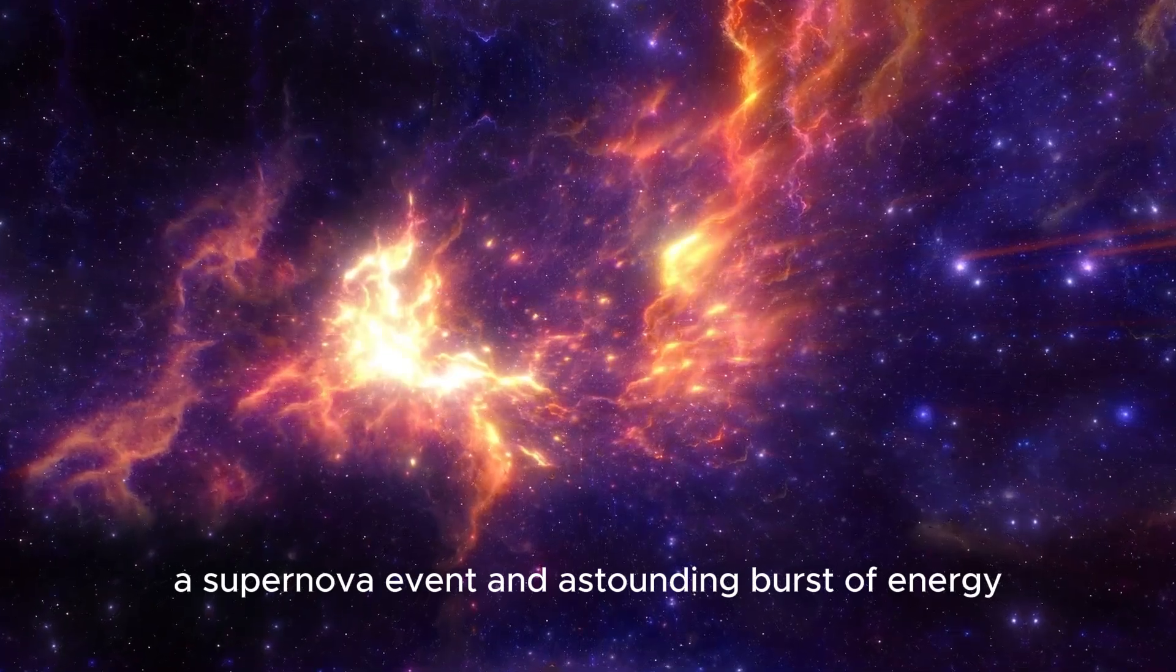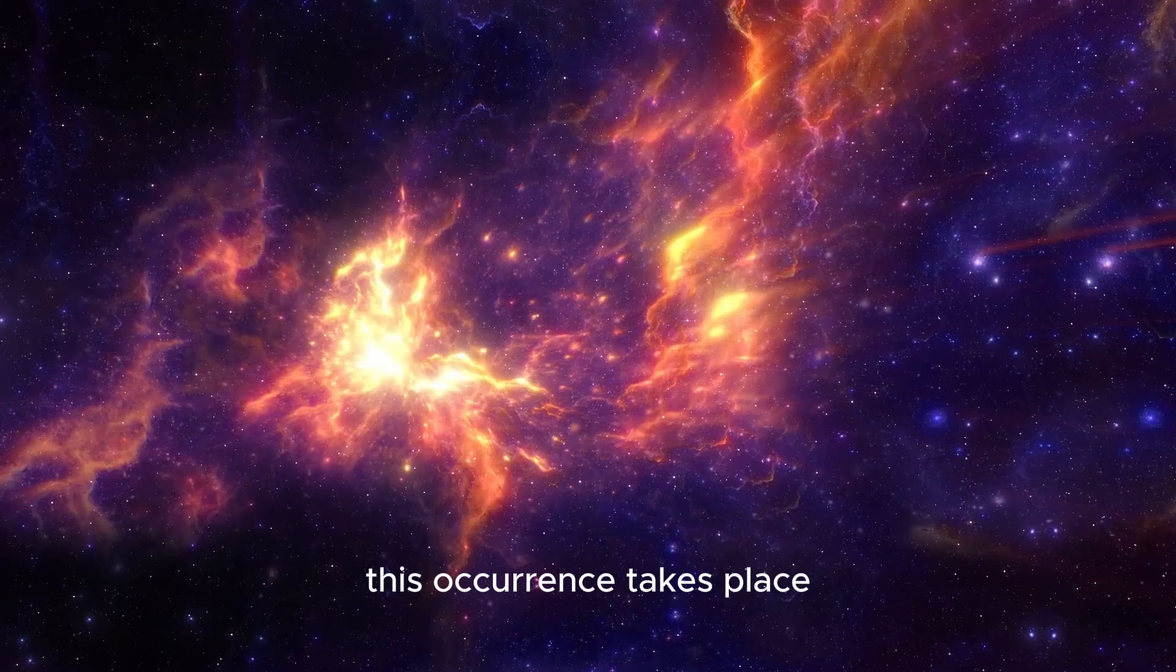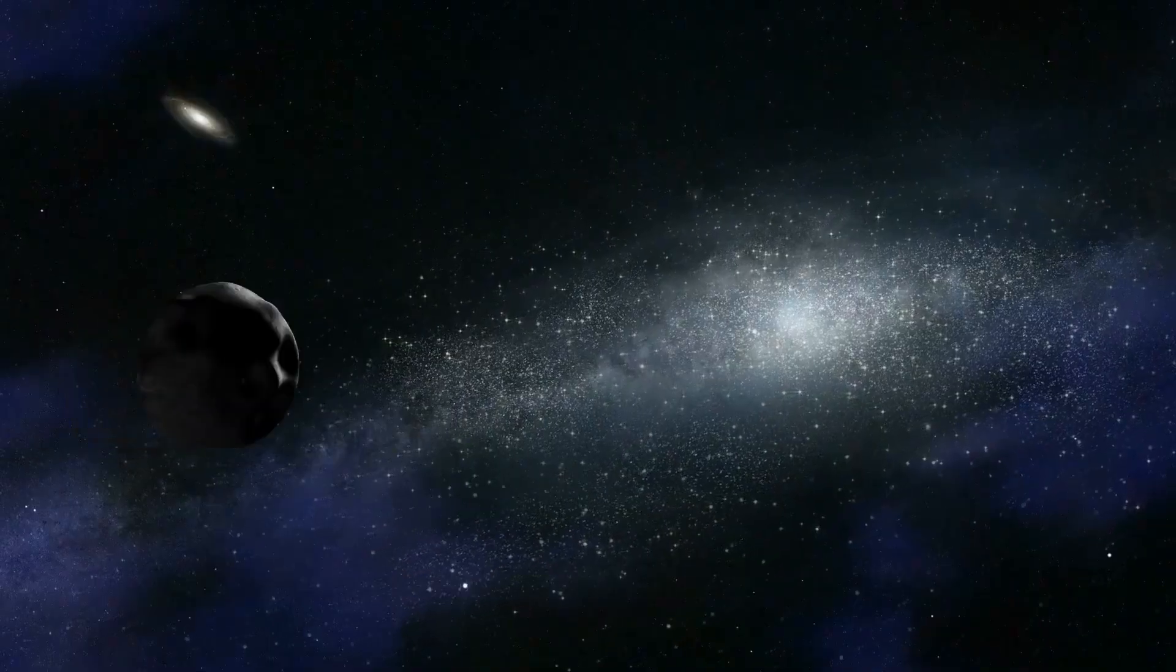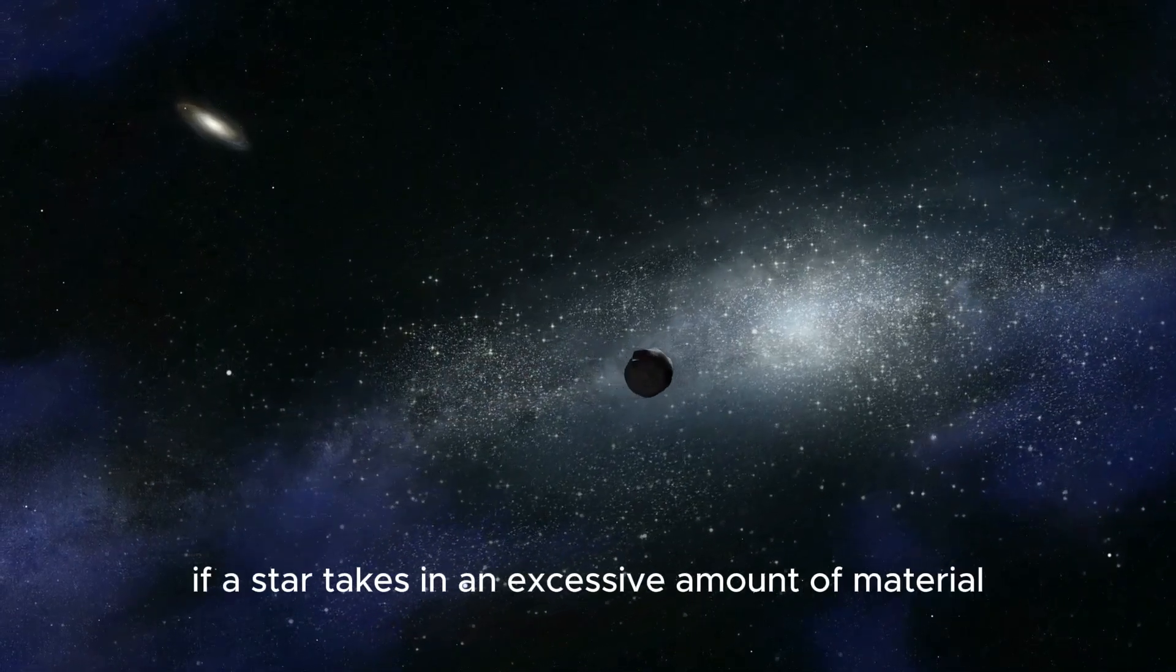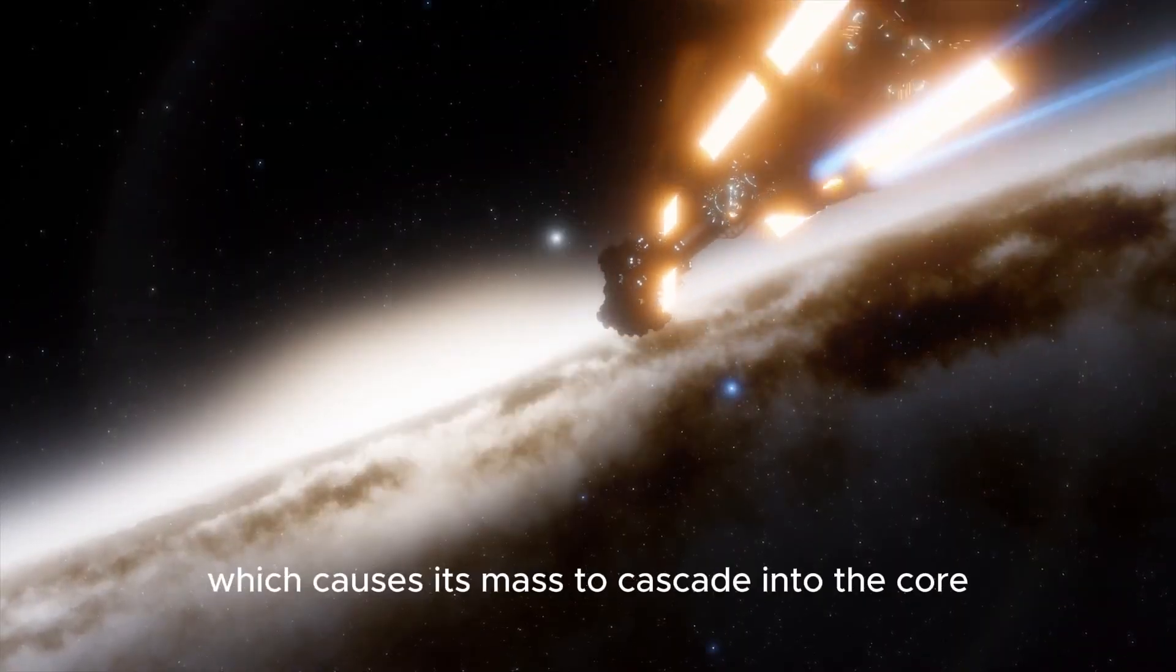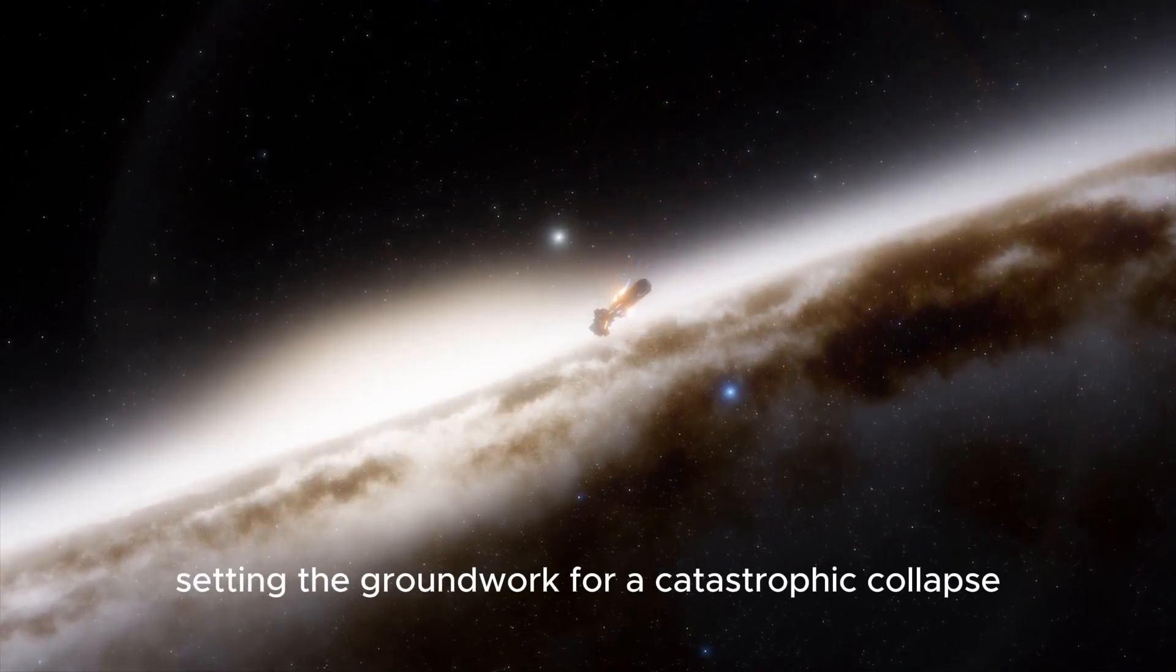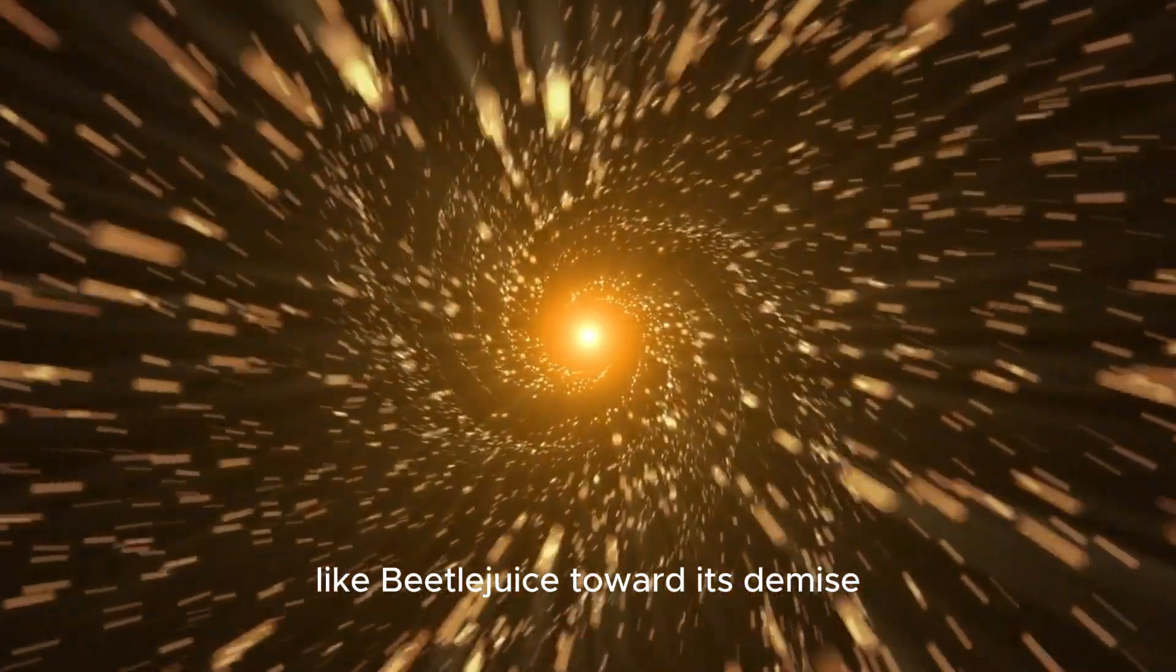An astounding burst of energy that can outshine an entire galaxy momentarily. This occurrence takes place when there is a rapid alteration in the star's nucleus. Such transformations can happen if a star takes in an excessive amount of material from a nearby star, or, in the case of Betelgeuse, it may stem from the depletion of its nuclear energy, which causes its mass to cascade into the core, setting the groundwork for a catastrophic collapse.